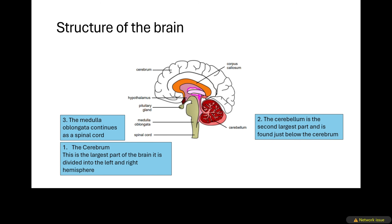Now let's look at the structure of the brain. The brain consists of several labeled parts. The cerebrum is the largest part of the brain, divided into the left and right hemisphere. The second largest part is the cerebellum — don't confuse the names. And then we have the medulla oblongata. Those three are the most important ones you need to know.